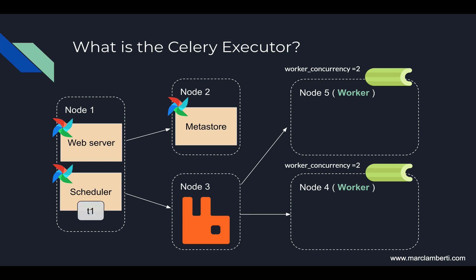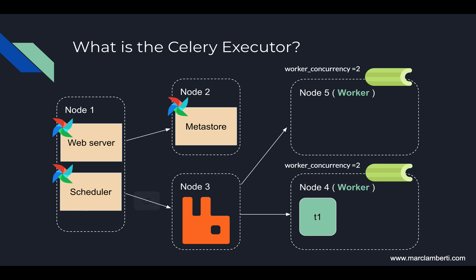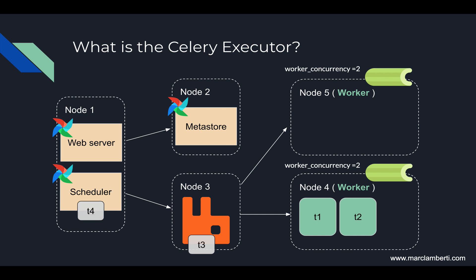At first, task 1 is getting scheduled. Then the scheduler sends task 1 into RabbitMQ. Since both workers are free, let's say the worker on node 4 fetches the task from the queue. Finally, the task is executed in a pool of sub-processes on node 4. This number of processes is defined by the parameter worker_concurrency — here limited to two per worker — so up to four tasks can be executed in parallel in the cluster. The same process goes on for all tasks 2, 3, and 4.